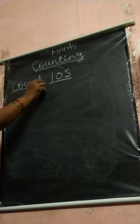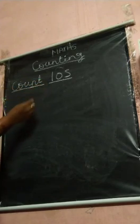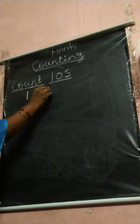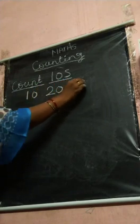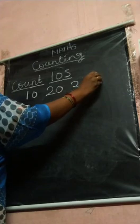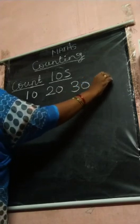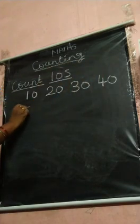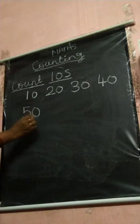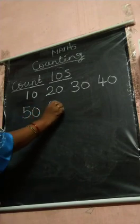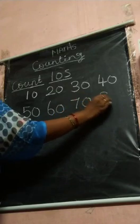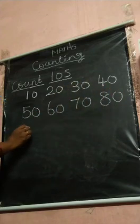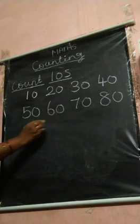Next we are going to see the tens count. Ten, twenty, thirty. Say children, after thirty: forty, fifty, sixty, seventy, eighty, ninety, hundred.